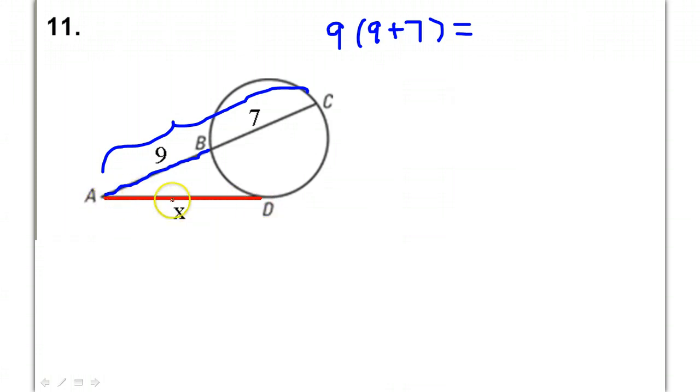So when I go to do part times whole, that's going to be x times x. So what do you think I'm going to put here? I'm going to put x squared. Part times whole. Well, x times x is x squared.